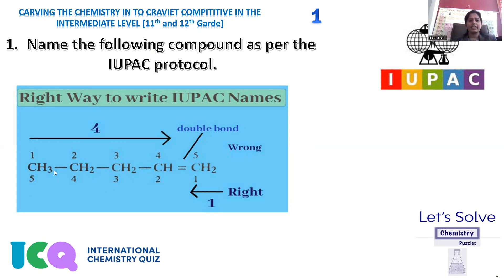If you are taking the numbering from the left-hand side, the order will be one, two, three, four, five. If you are starting from the right-hand side, one, two, three, four, five will be the order. Here, you will get the double bond on the first carbon. If you are starting from the left-hand side, the double bond will get on the fourth carbon.